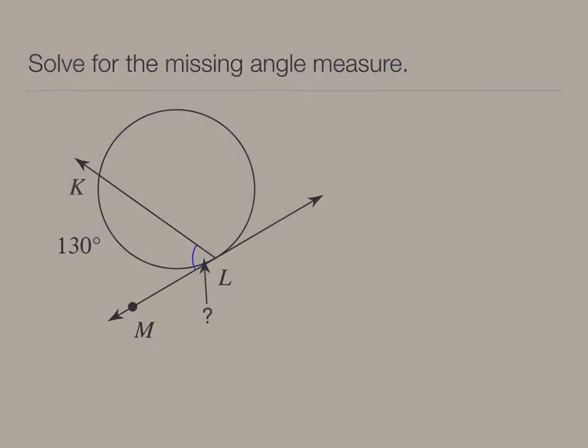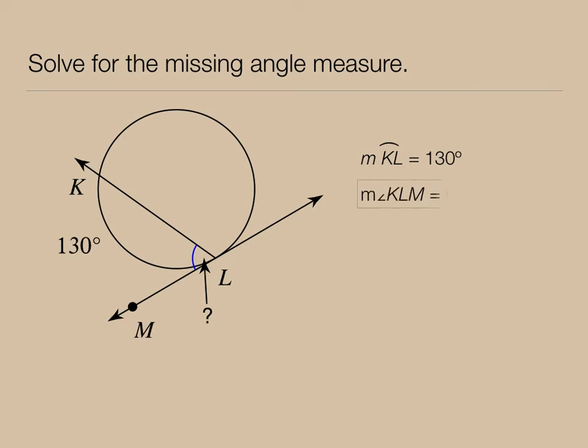Here's one for you to try. How could we find the measure of angle KLM? We know the measure of the arc that it intercepts is 130 degrees. Therefore, the inscribed angle, which is the unknown, is 65 degrees, which is half the measure of the intercepted arc.